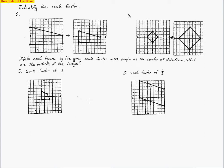This is the second half of the tutorial for chapter 4, section 4, and the next set of directions we'll see is identifying the scale factor. They're going to give you two images — the original image and the new image. I know this is the pre-image because of the arrow: the arrow starts here and goes to the other one, so the arrow is pointing to the new image. So I've got the pre-image and the new image.